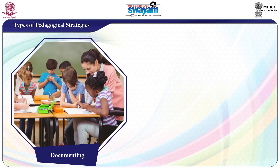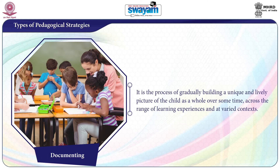Strategy 9 is Documenting — a process of gradually building a unique and lively picture of the child as a whole, over some time, across the range of learning experiences and at varied contexts.